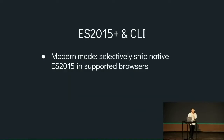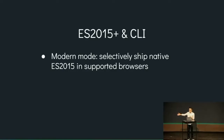ES2015 in the CLI integration is mostly about selectively shipping native ES2015 to supported browsers. Transpiled code is less efficient because it uses extra ES5 code to achieve what native code does natively, and native code is better optimized by the engine. That's exactly what Modern Mode in the CLI does — it automatically builds two bundles, one targeting modern browsers and one targeting legacy, then generates HTML that falls back to the legacy bundle only when the browser doesn't support ES2015.